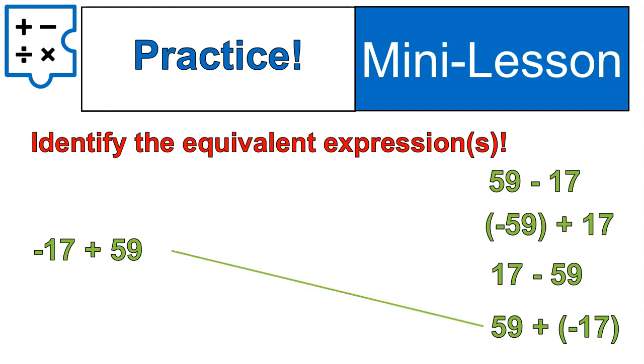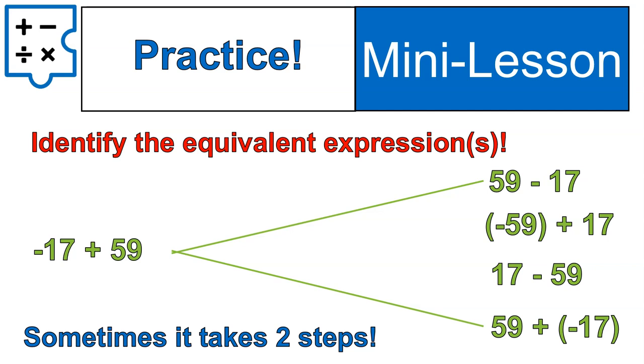First off, it could be this. You could have written 59 plus negative 17, and that would be absolutely correct. You could also write 59 minus 17 if we're simplifying it down. So it's actually both of these answers are correct